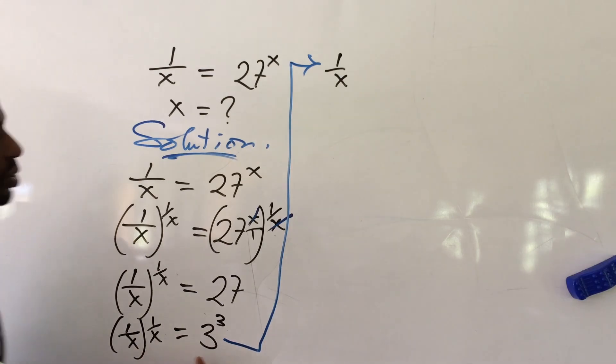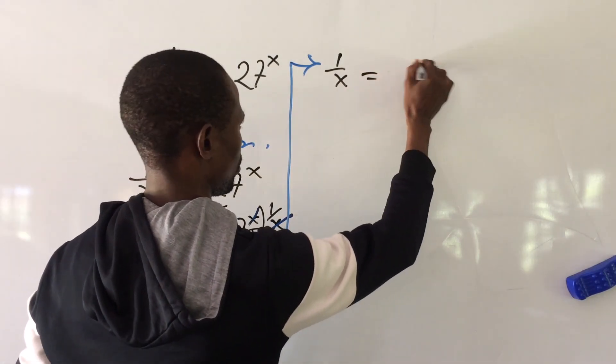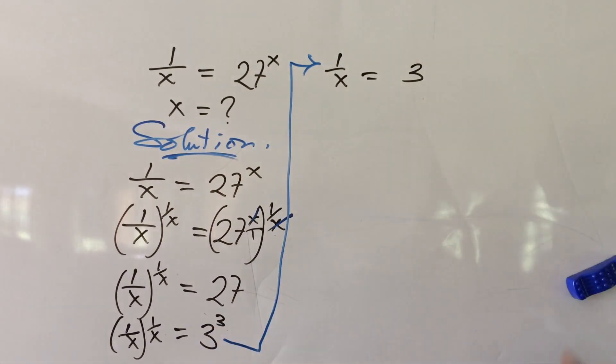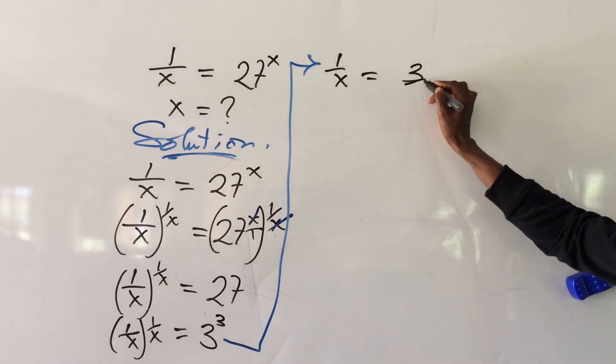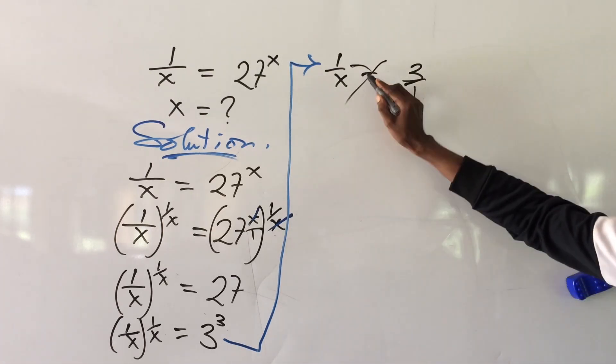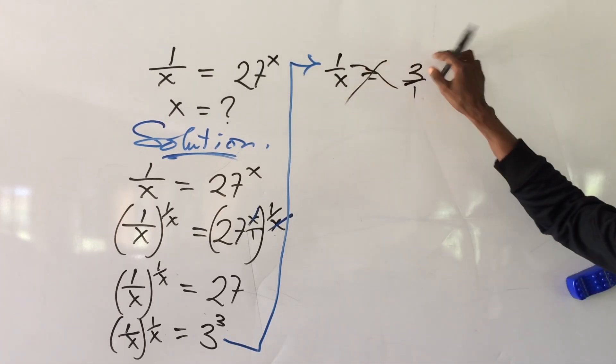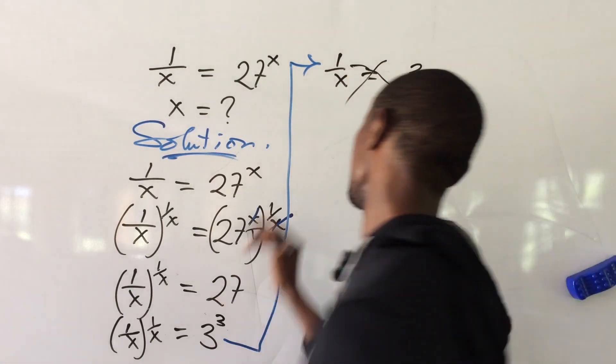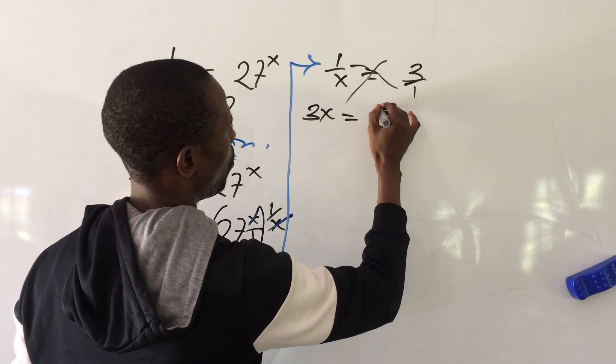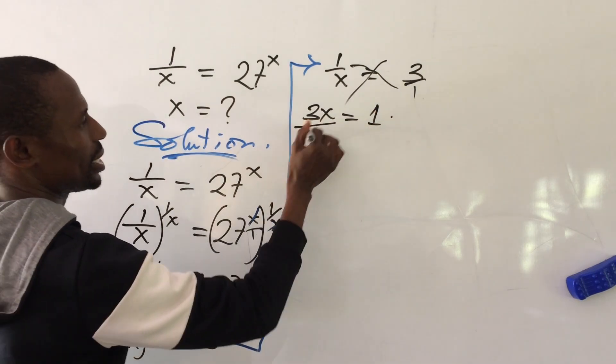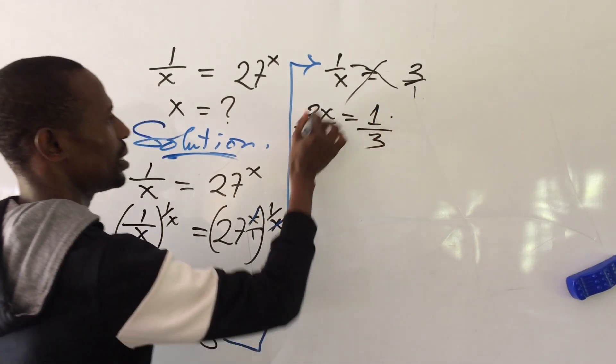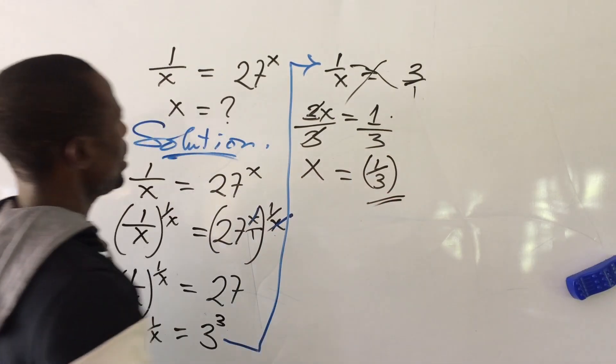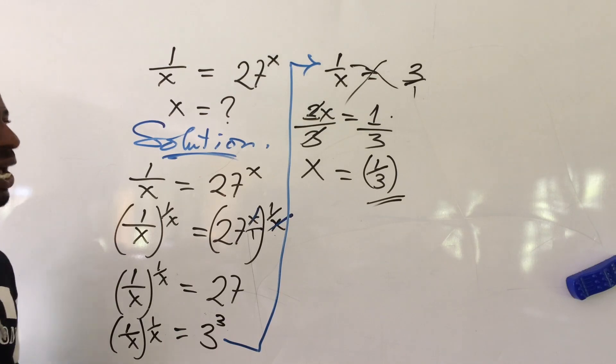Very easy, so the equation is now simplified. We can now get our x much easier. If we have 1 over x equal to 3, all we need to do is to cross multiply. So 3 times x and 1 times 1 will give us 3x equal to 1. Getting our x is simpler now, so we have x equal to 1 all over 3.